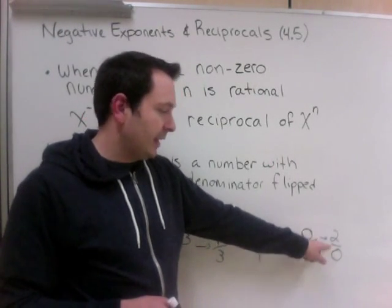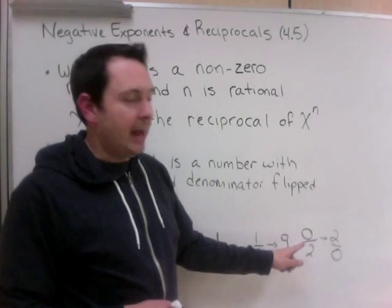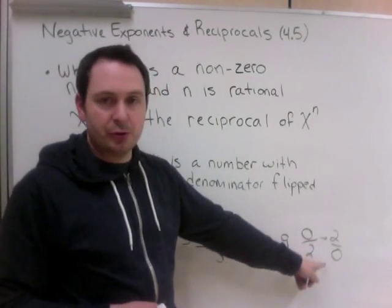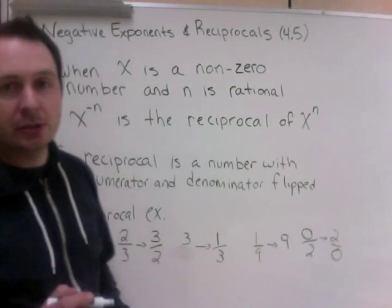That's maybe the number one rule of math. You can never, ever, ever divide by zero. And when we take zero and try to do its reciprocal, that's what you're trying to do. So it's not allowed.